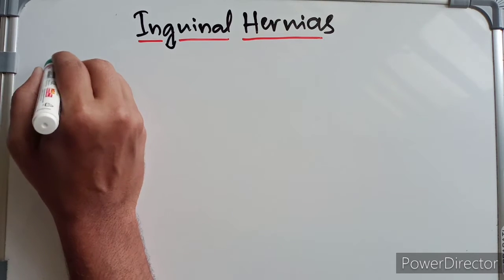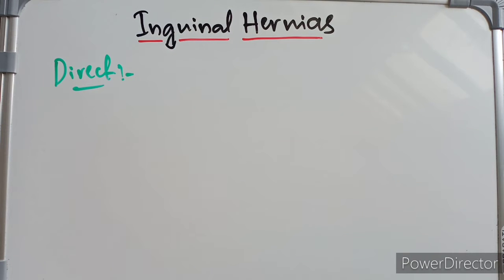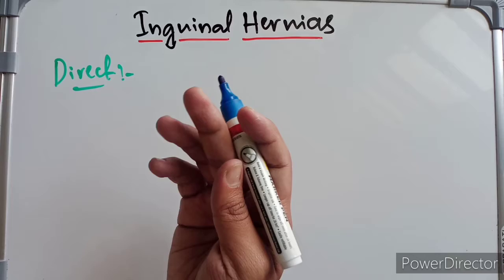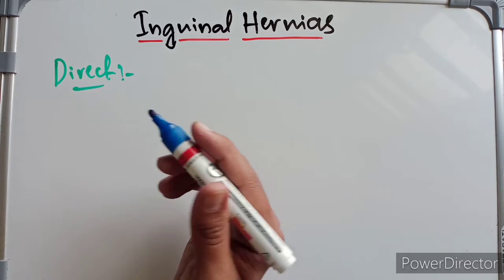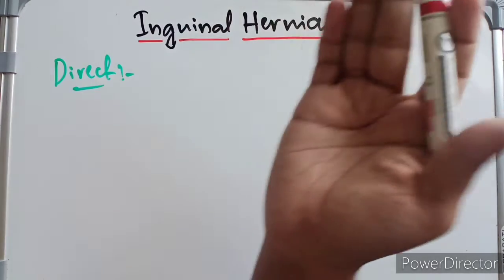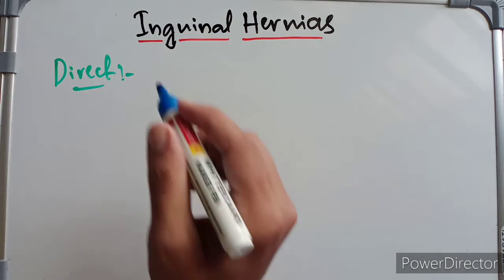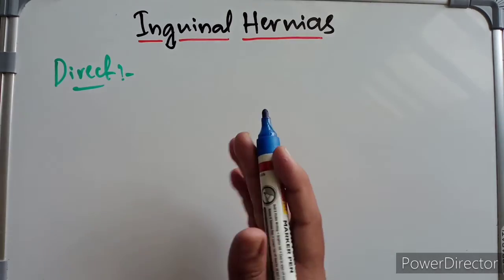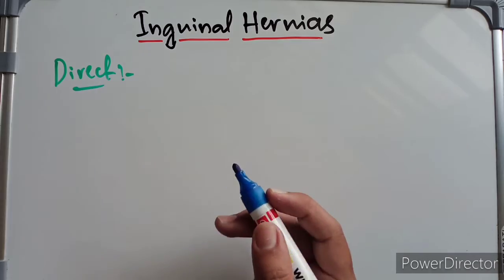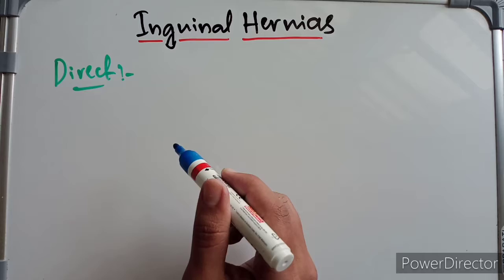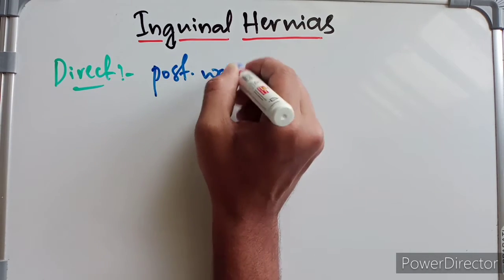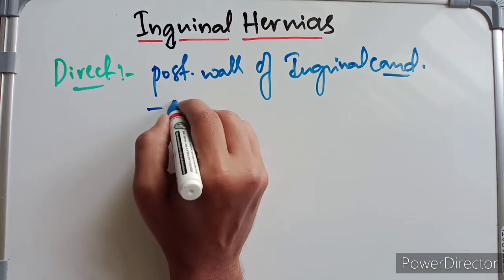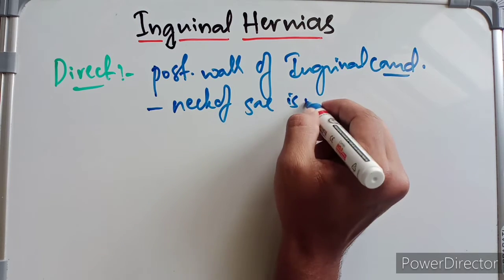Coming to the direct inguinal hernia: it occurs when the hernial sac enters the inguinal canal not through the deep inguinal ring, but by pushing through the posterior wall of the inguinal canal. The posterior wall is formed by the fascia transversalis and the conjoint tendon. It enters medial to the inferior epigastric artery, passing through Hesselbach's triangle. The neck of the hernia sac is wide in direct inguinal hernia.